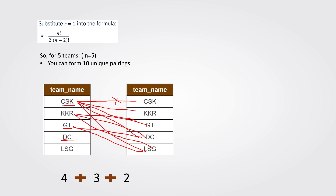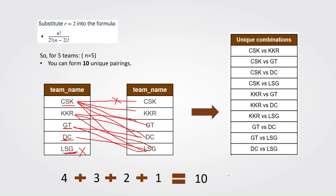From DC: DC vs CSK, DC vs KKR, and DC vs GT are all invalid as already considered, so only DC vs LSG — one combination. For LSG, all combinations have already been considered, and LSG vs LSG is invalid. So the total is 4 + 3 + 2 + 1 = 10 unique combinations, which is the final expected output.